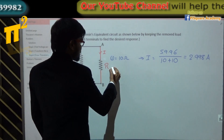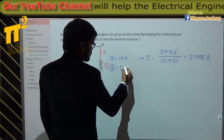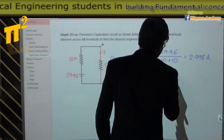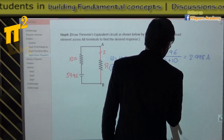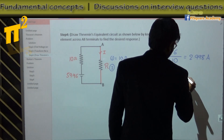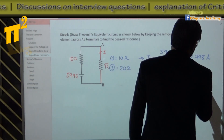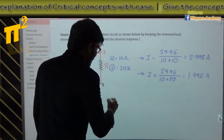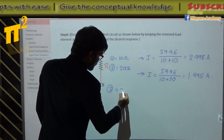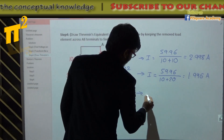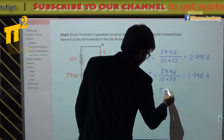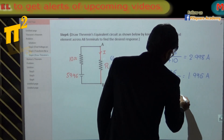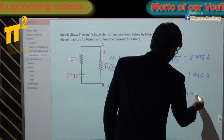In the second case, R equals 20 ohms. Then I equals 59.96 divided by (10 + 20), giving 1.996 amperes. In the third case, R equals 50 ohms. Then I equals 59.96 divided by (10 + 50), giving 0.99 amperes.